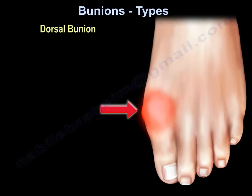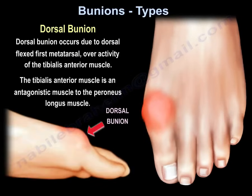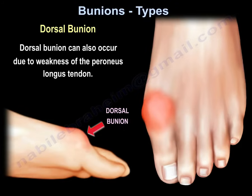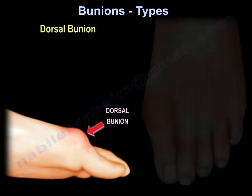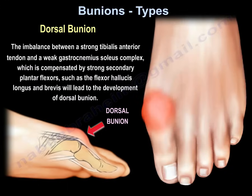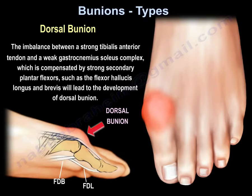Dorsal bunion occurs due to dorsiflexion of the first metatarsal from overactivity of the tibialis anterior muscle. The tibialis anterior is an antagonistic muscle to the peroneus longus muscle, so dorsal bunion can also occur due to weakness of the peroneus longus tendon. Dorsal bunion can occur as a residual deformity after correction of a clubfoot deformity.